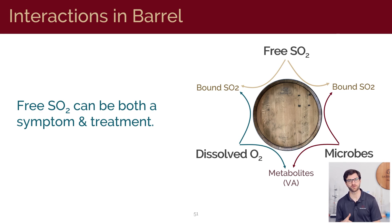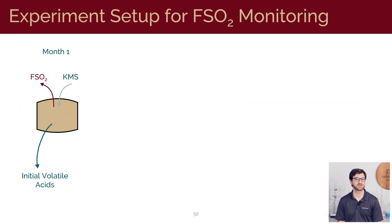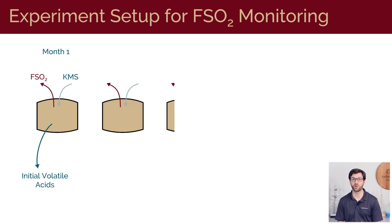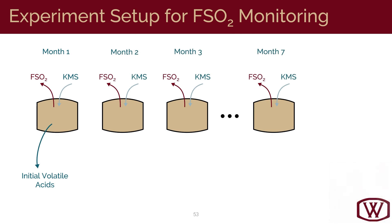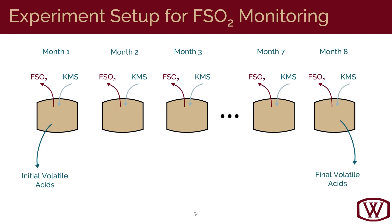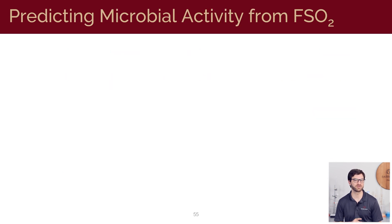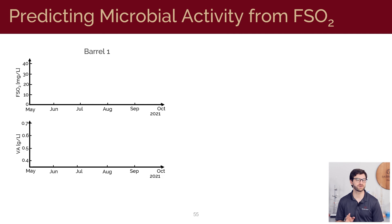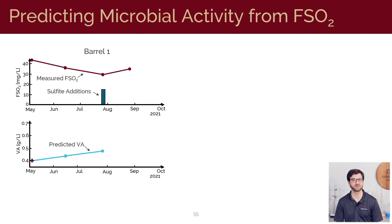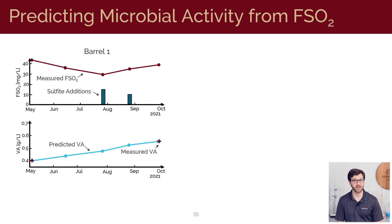To explore this relationship further, we performed an experiment in a winery where we took a group of about 30 barrels. At the start of the experiment, we measured the free SO2 and the volatile acidity concentrations of each barrel. Then for the next 7 months, we measured only the concentration of free SO2 and any sulfite additions made to each barrel. At the end of the experiment, we again measured volatile acidity for each barrel. The hypothesis is that we can estimate the level of VA in each barrel based only on free SO2 and sulfite addition data, and we see that the predicted and measured values agree quite well.